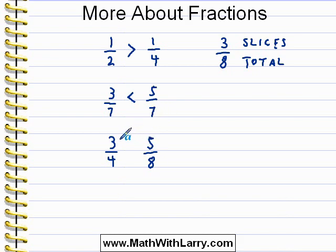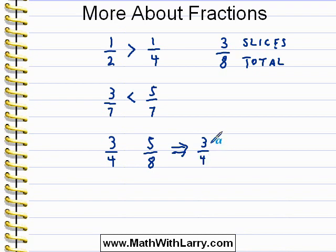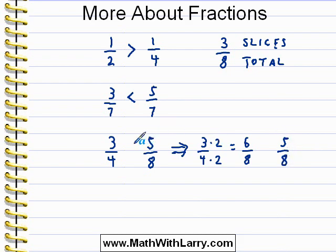What we're allowed to do — and later you'll learn why this works — is multiply the numerator and denominator of a fraction by the same number. I can take 3 fourths and multiply top and bottom each by 2, which converts 3 fourths into 6 eighths. The advantage is that now I can very easily compare that to 5 eighths. Now that the fractions have the same denominator, it's very easy to see that 6 out of 8 is bigger than 5 out of 8. If we hadn't converted the first fraction, it would be difficult to see which one represents a larger portion of the whole.